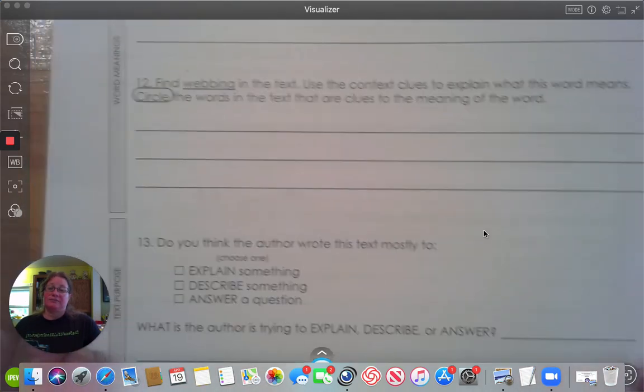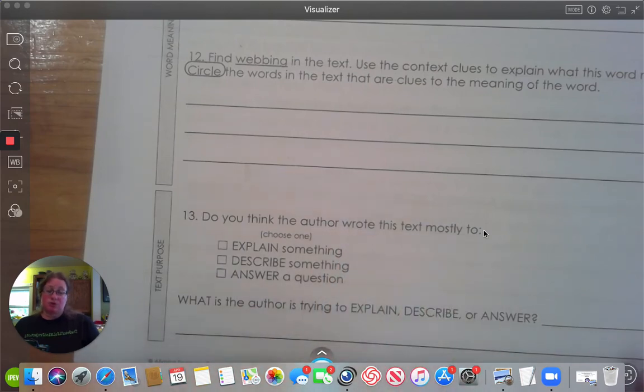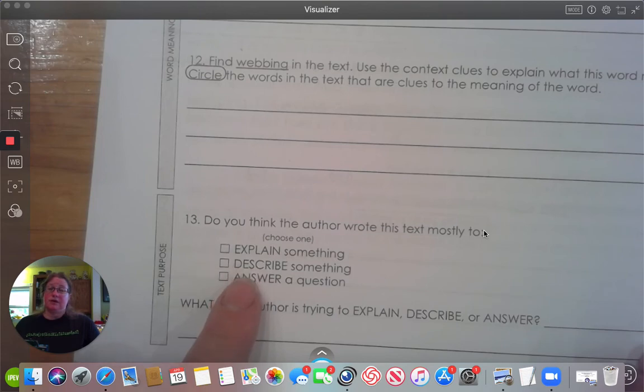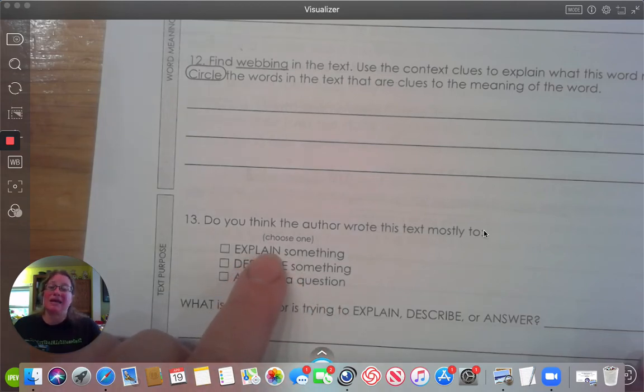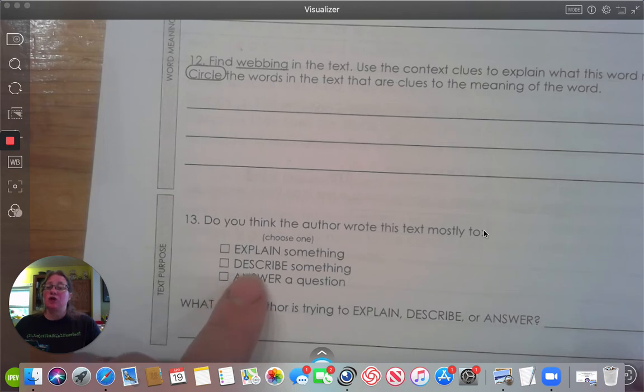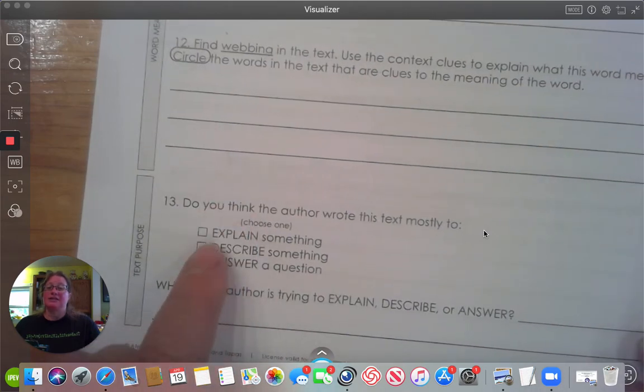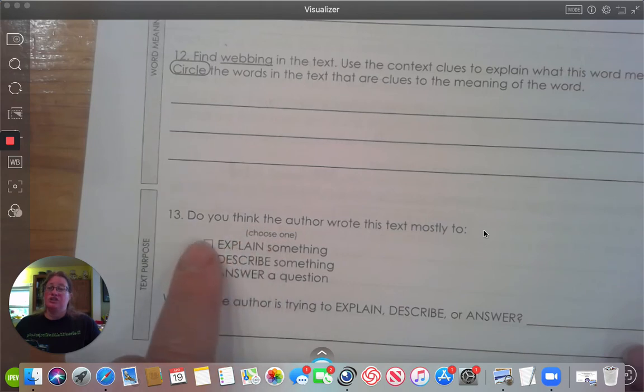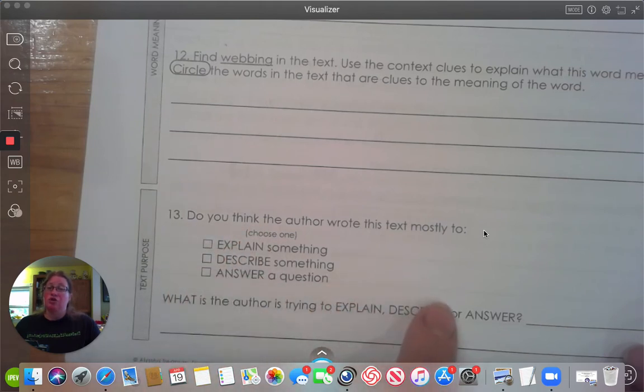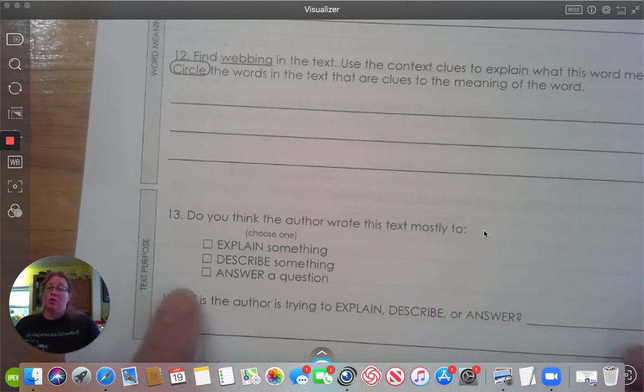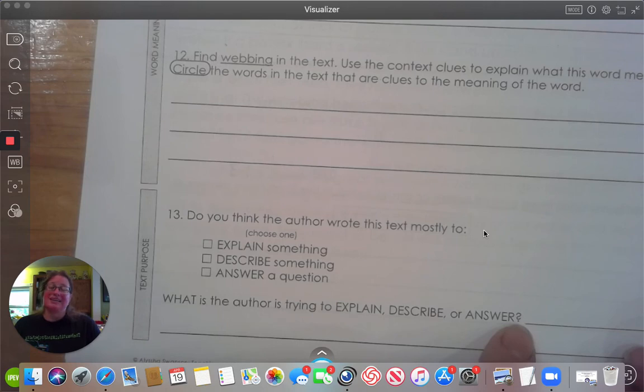Number 13. Do you think the author wrote this text mostly to explain, describe, or answer a question? Was he explaining how to make something or how to do something? Was he giving you steps? Or was he describing something? Or was there a question that was being answered? You think about that one and put an X in the box for the correct answer. Whichever box you mark, circle the vocabulary word that you will be using. What is the author trying to explain, describe, or answer? Answer that question in a complete sentence. Remember, capital letters, punctuation, five to seven words. And make sure it answers the question and makes sense.